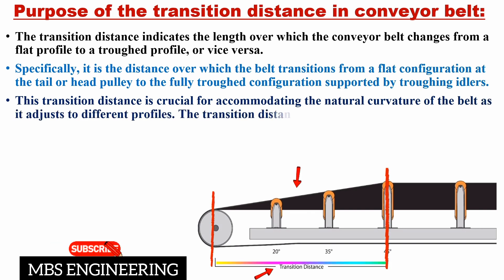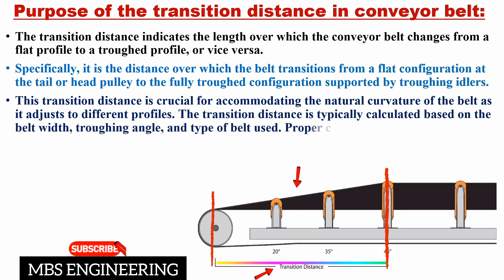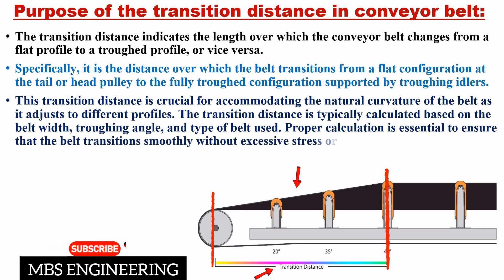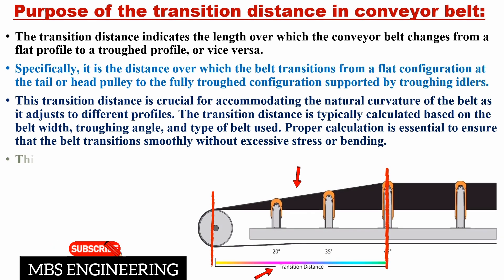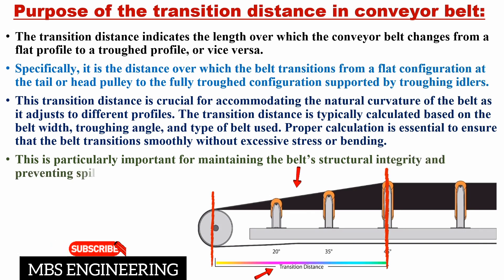The transition distance is typically calculated based on the belt width, troughing angle, and type of belt used. Proper calculation is essential to ensure that the belt transitions smoothly without excessive stress or bending. This is particularly important for maintaining the belt's structural integrity and preventing spillage of materials.